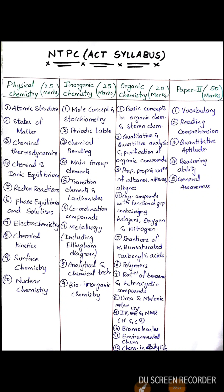Coming to the NTPC ACT syllabus — as discussed, there are two papers. Paper 1 is completely chemistry, covering physical chemistry, organic chemistry, and inorganic chemistry. Each section has different weightage: physical chemistry is 25 marks, inorganic chemistry is 25 marks, and organic chemistry is 20 marks. The syllabus is vast, so you should be very wise while preparing.